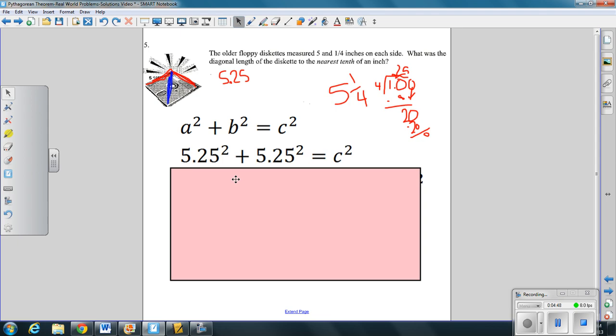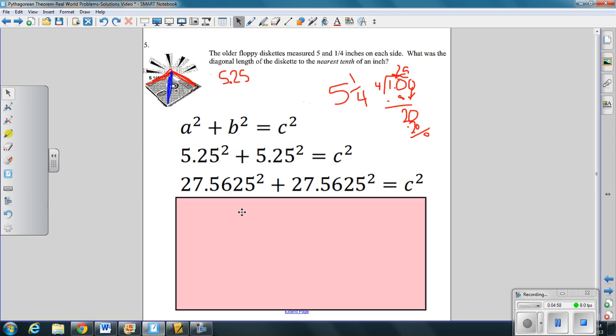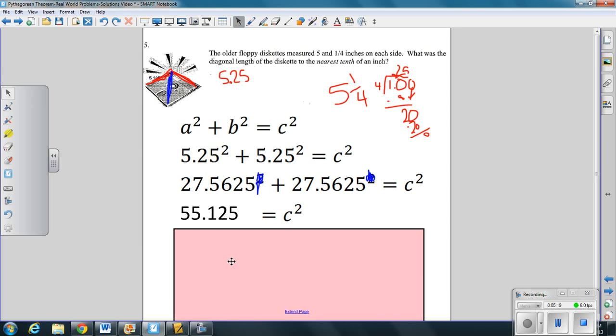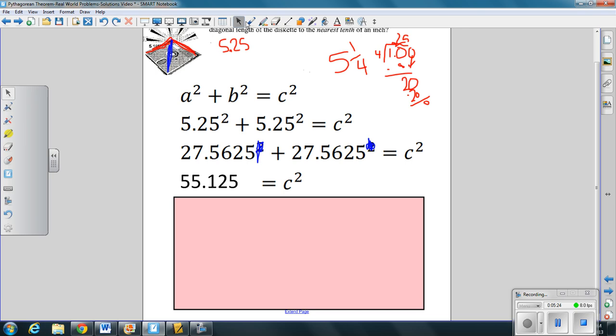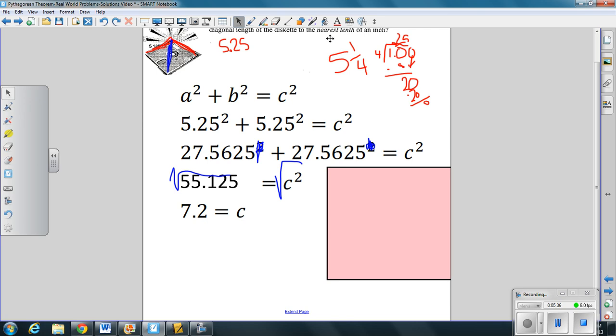So what do we do? 5.25 squared plus 5.25 squared equals c squared. Squaring both of those numbers give us 27.5625. Sorry, let's get rid of that square. That shouldn't be there. We've already squared the numbers. So is equal to c squared. So what do we do from here? We add these two numbers together to get 55.125. And how do we isolate c? I hope we are all shouting square root. And the square root of 55.125 is, using your calculator, is 7.2. Remember, instruction set to the nearest tenth. So this answer means the distance across the diagonal is 7.2 inches in length. Any questions, please raise your hand and ask.